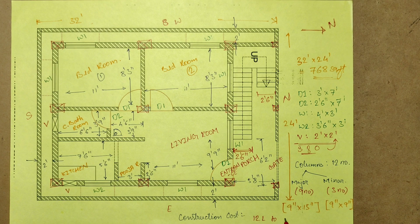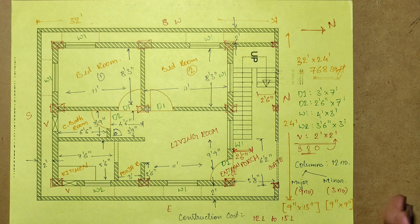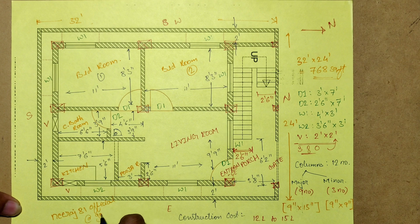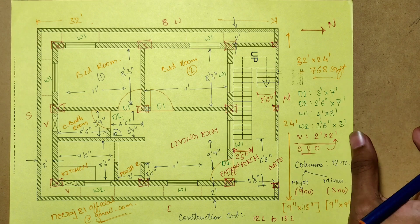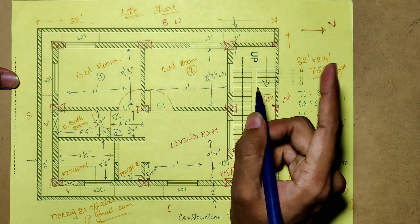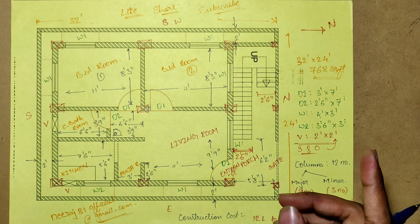The approximate construction cost of the house is 12 lakhs to 15 lakhs. You can contact me at neeraj81official@gmail.com. That's all for today, guys — see you in the next video, take care, bye-bye.